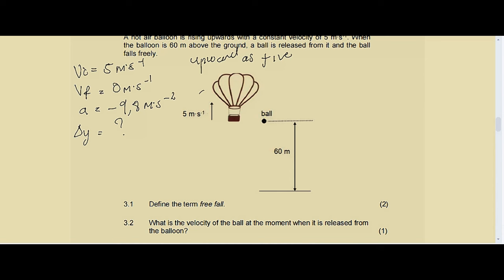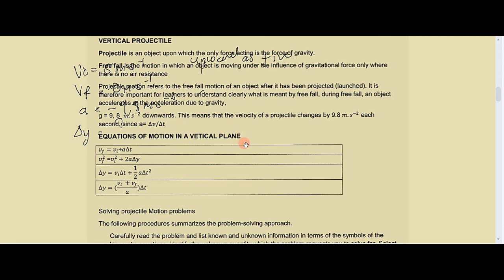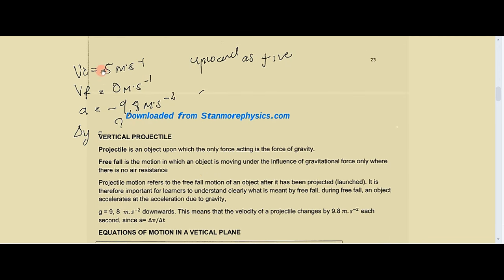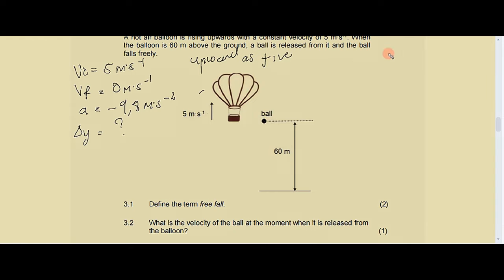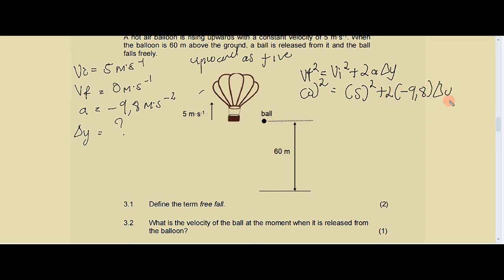Looking at our data — we have vf, vi, and a, and we're looking for delta y — the correct formula to use is formula number two: vf squared equals vi squared plus two times a times delta y. Substituting: zero squared equals five squared plus two times negative 9.8 times delta y. This gives us negative 25 equals negative 19.6 times delta y. Dividing both sides by negative 19.6, delta y equals 1.28 meters.